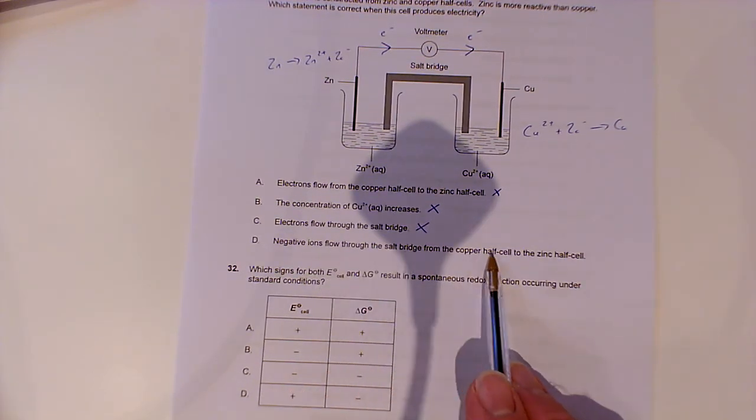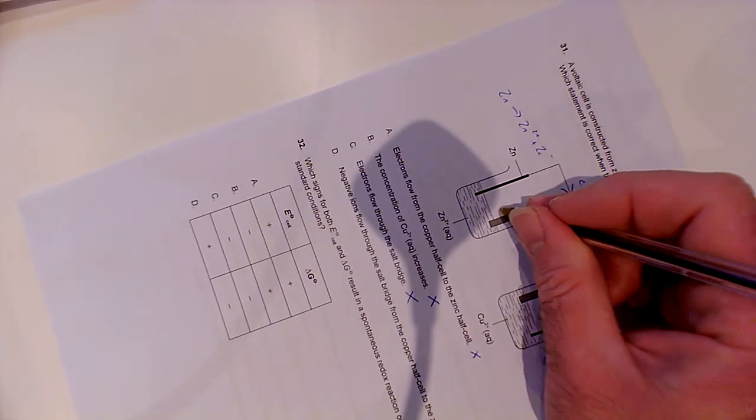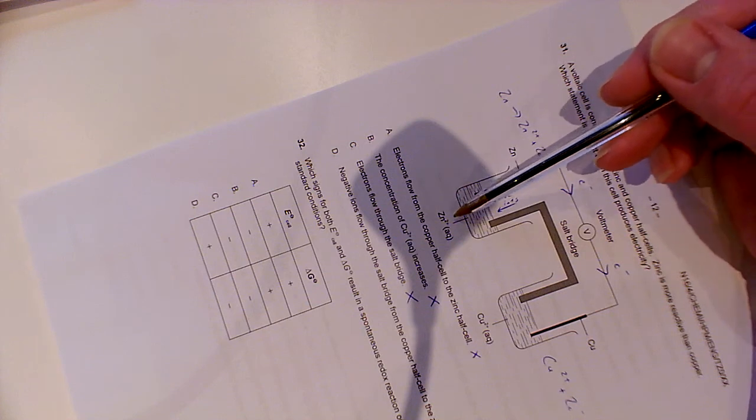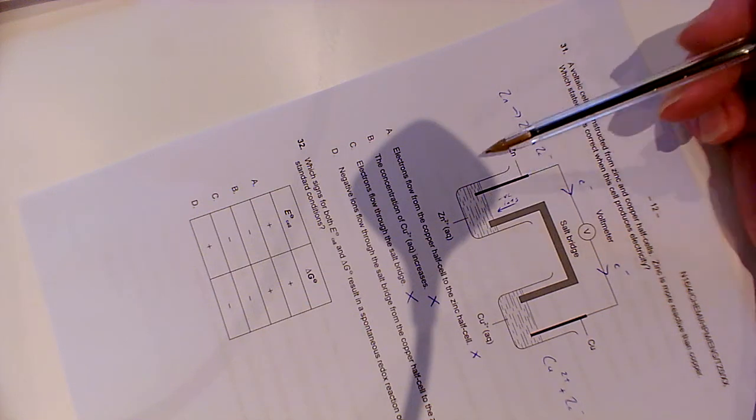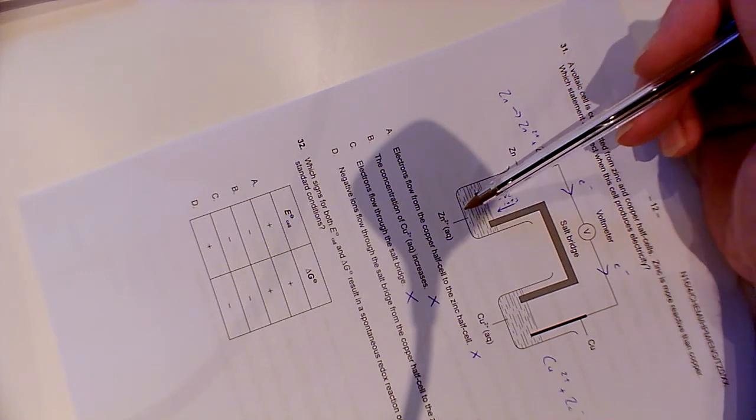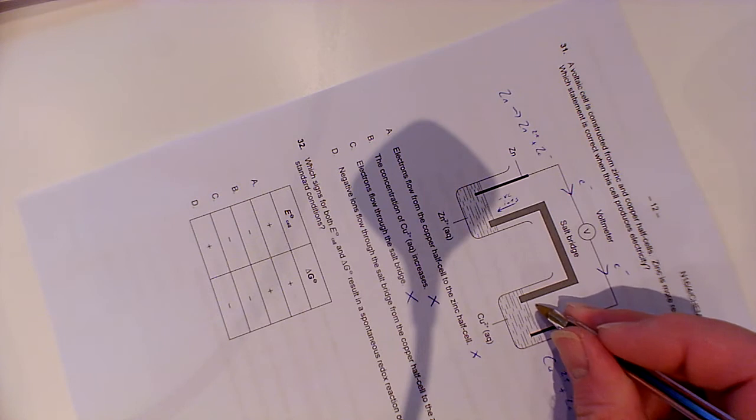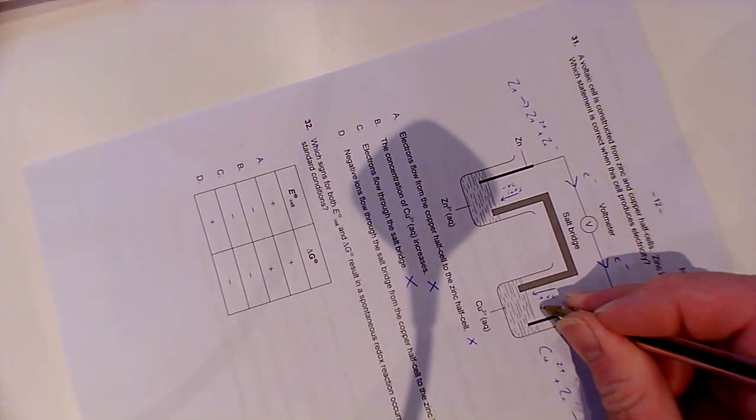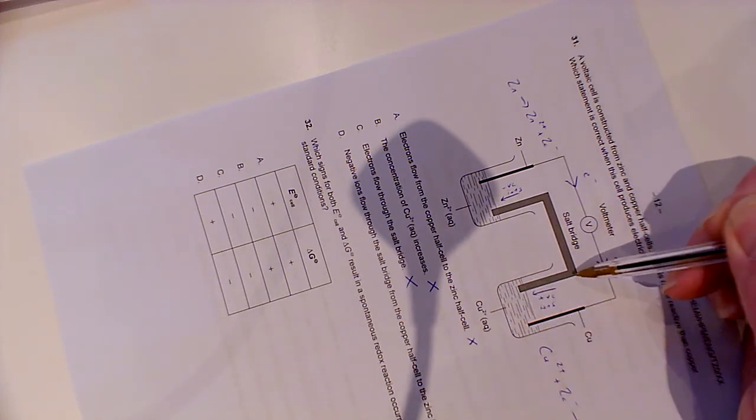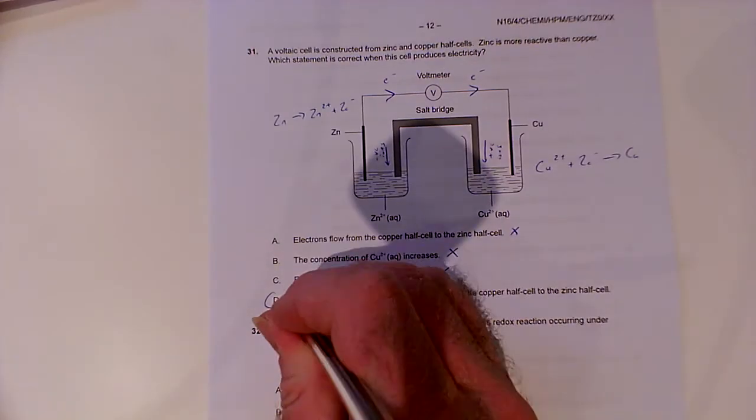Negative ions flow through the salt bridge from the copper half-cell to the zinc half-cell. We do need negative ions to flow into this cell. The reason for that is otherwise it will stop working. At the start, the balance was charged between the zinc 2+ ions and whatever other ions were present, chloride ions or whatever. But as we're creating more positive ions, there will be a build-up of positive charge in this cell. We need negative ions to flow into the cell to balance out that charge. Similarly, we would need positive ions to flow into this cell because the concentration of positive ions is decreasing. That's why we need positive ions to go in and balance the charge. Otherwise, the cell will stop working. So D is the right answer.